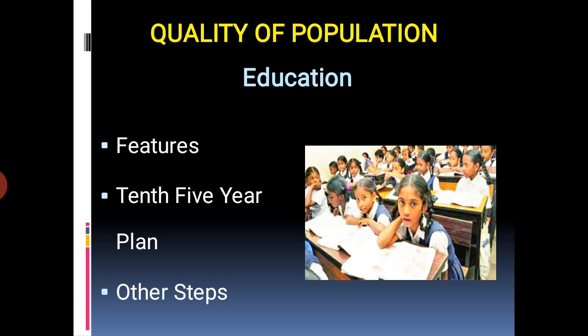There is a provision made for providing universal access, retention and quality in elementary education with special emphasis on girls. Special schools called Navodaya Vidyalayas have been established in each district. Government expenditure on education has increased in recent years, though female literacy remains much lower than male literacy all over India. For example, there is about 94% literacy in Kerala but only 62% in Bihar.